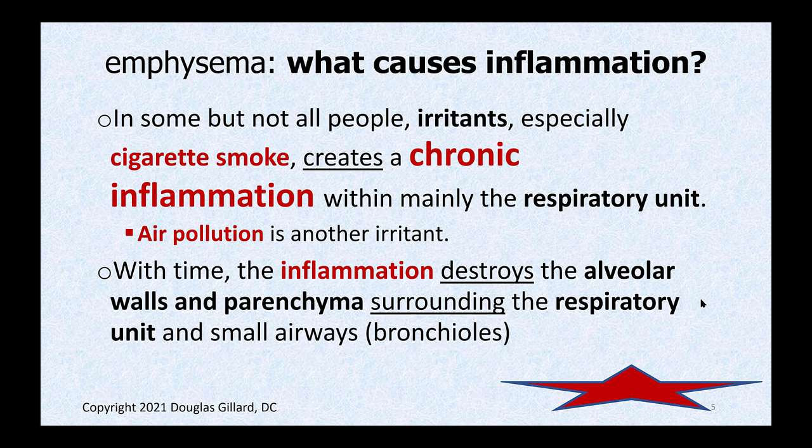What causes this inflammation? The trigger is thought to be irritants. Classically, cigarette smoke is probably the number one culprit; air pollution is right up there. Some chemical in the cigarette smoke is breathed in, gets into the respiratory unit, sticks, and the body's immune system attacks it. Now you've got inflammation going on. The inflammation will destroy the walls of the alveoli and the parenchyma.